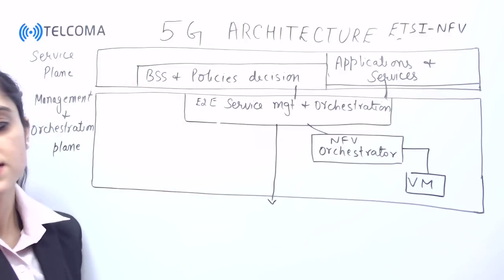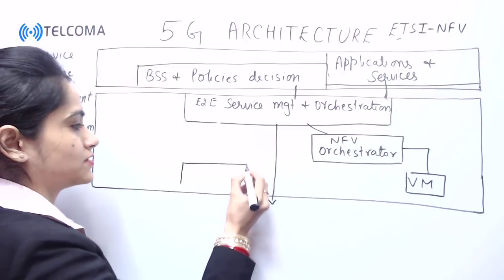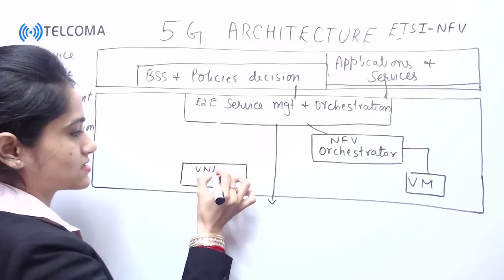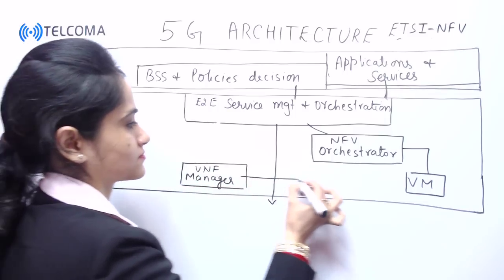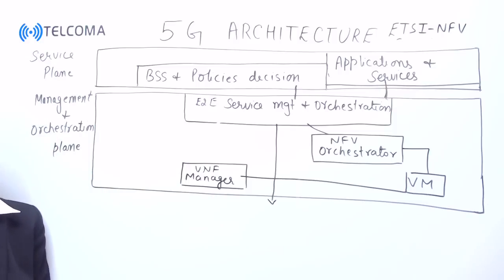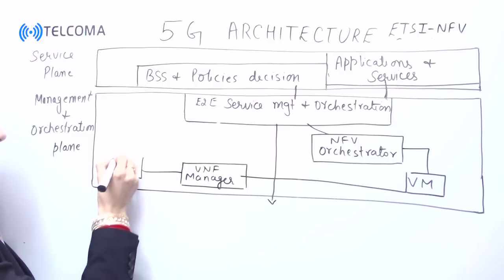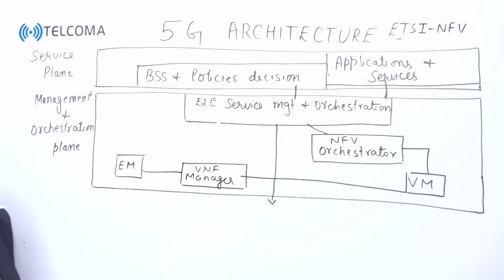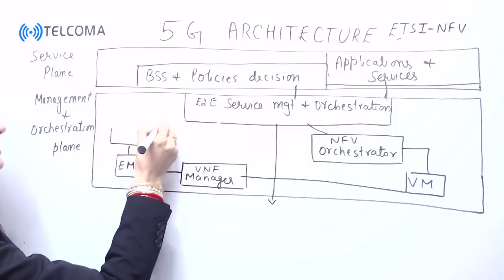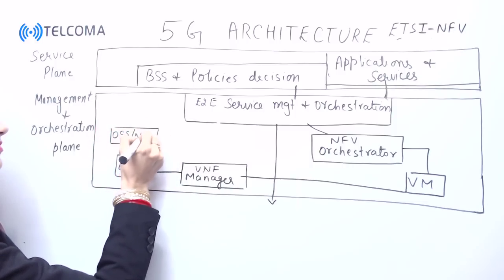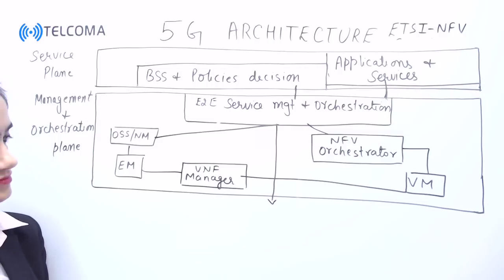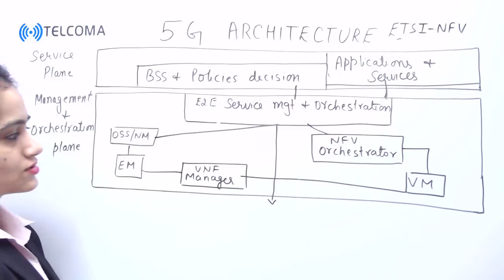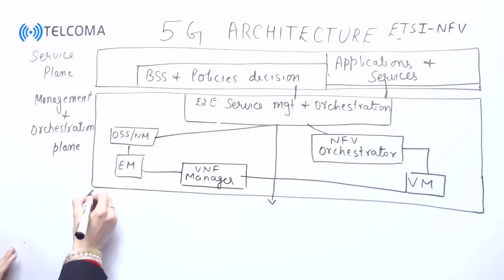The NFV orchestrator is connected to a virtualized machine (VM). The virtualized machine is connected to a manager — we call it the virtualized network function manager. It is further connected to a module for OSS and network management, which is also connected back to service management and orchestration.